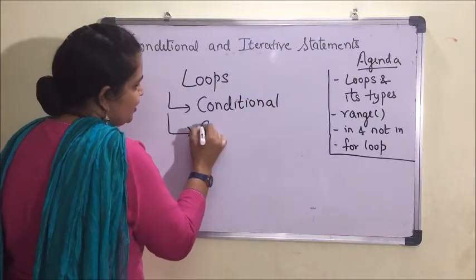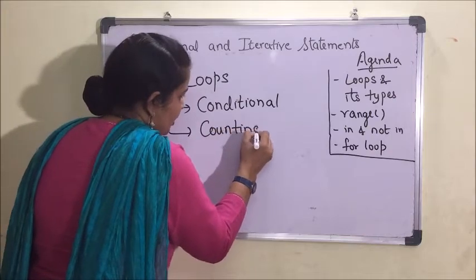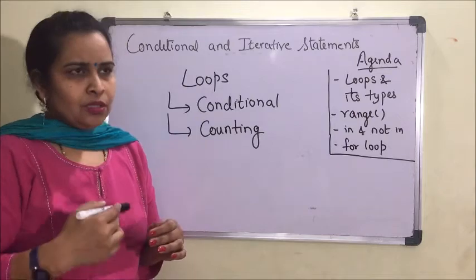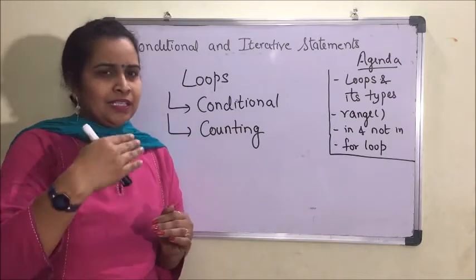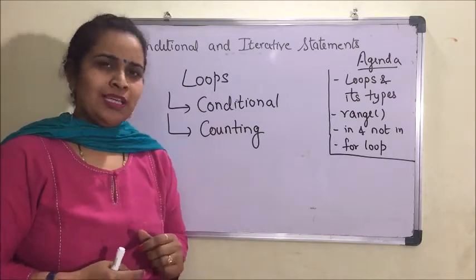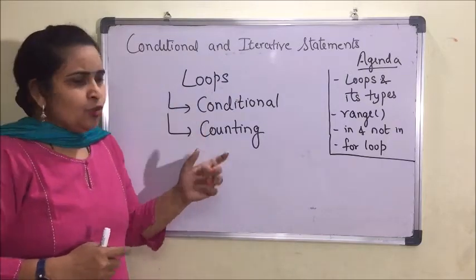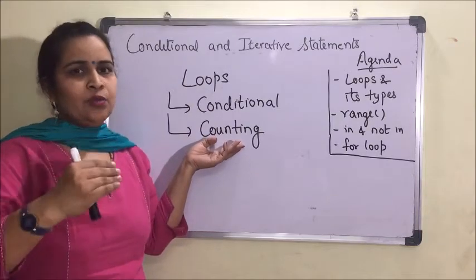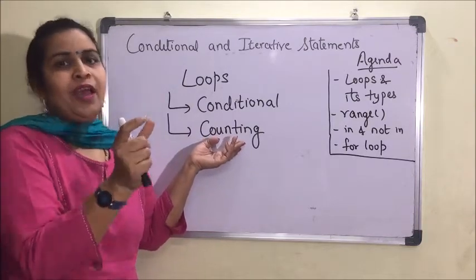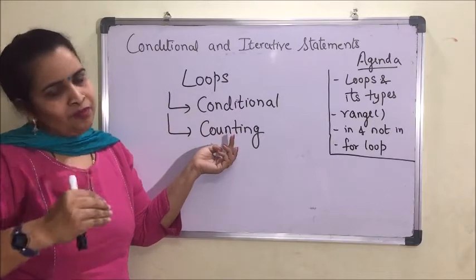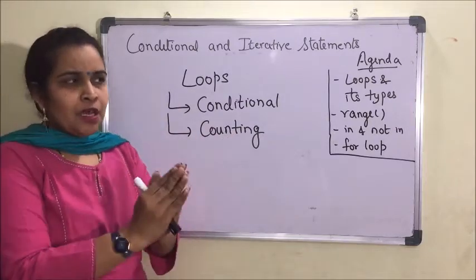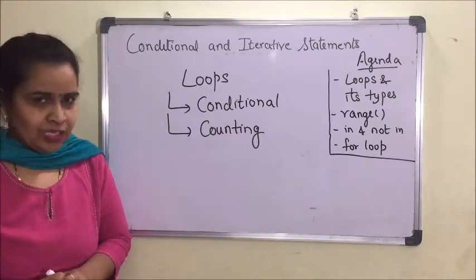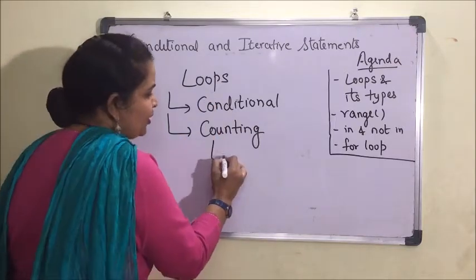There are two types of loops. The first one is a conditional loop and the second one is a counting loop. A conditional loop is a kind of loop in which the statements get executed till a particular condition is true. A counting loop is a type of loop in which the statements get executed the number of times we have defined — 10 times, 5 times, or 6 times. Beforehand, we are aware of how many times the loop will get executed.